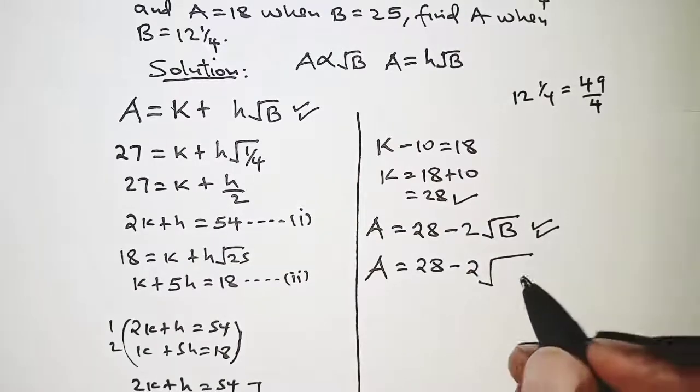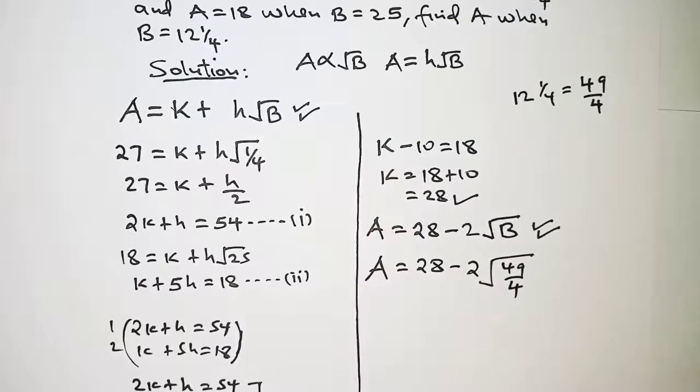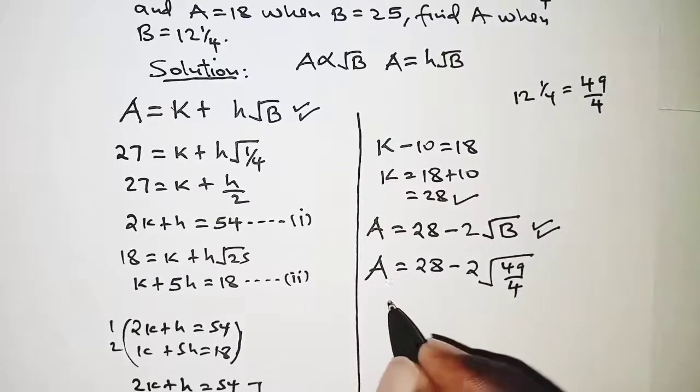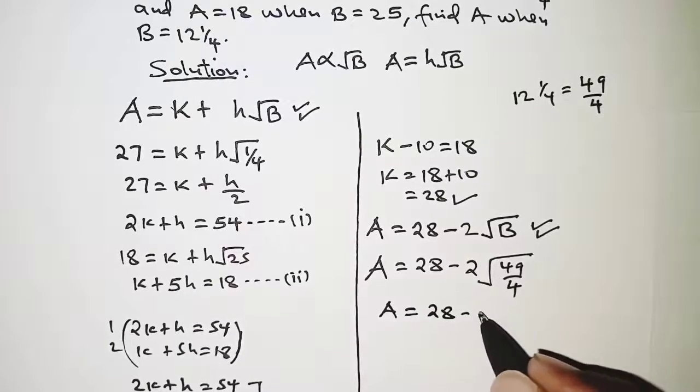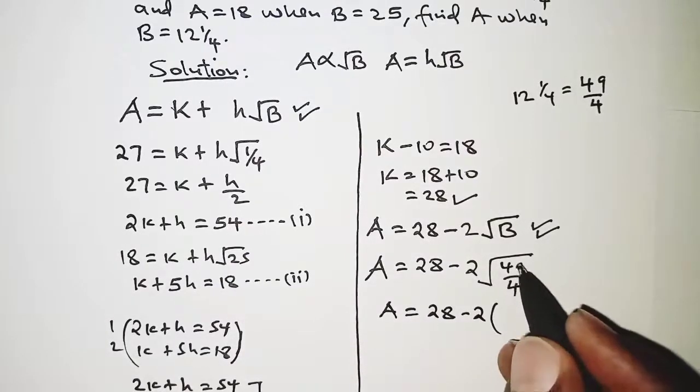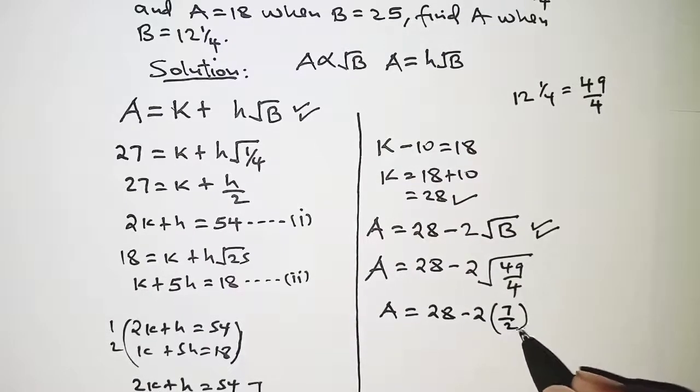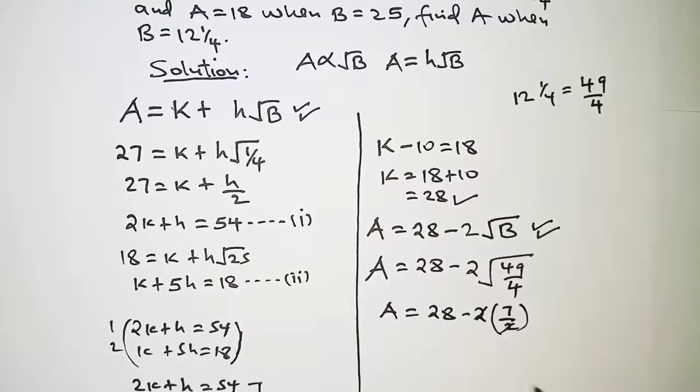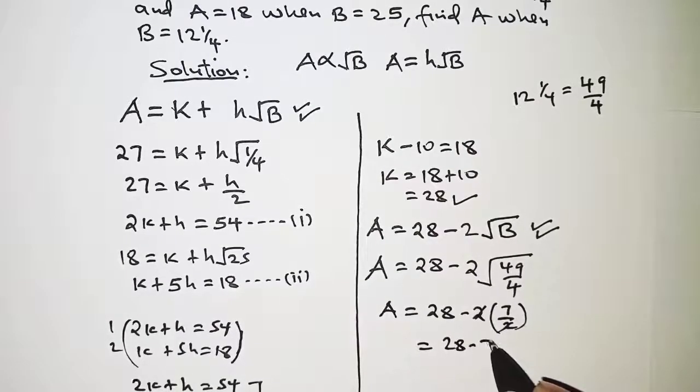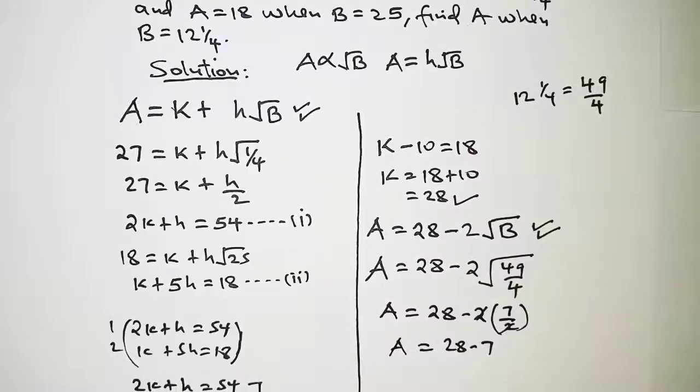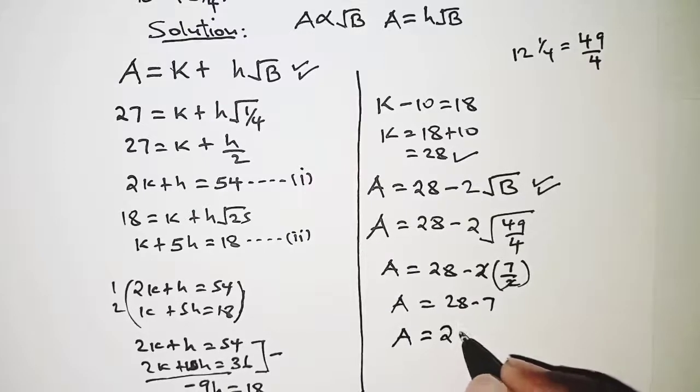12 and a quarter can be written as an improper fraction, that is 49 over 4. So writing that here we have 49 over 4 for B, so that finally we have A is equal to 28 minus 2 into the square root of 49 over 4, that is 7 over 2. 2 cancels by 2 and then we have 28 minus 7. Finally the value of A is 21.